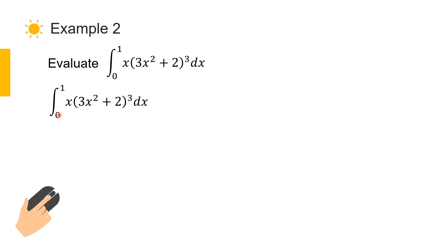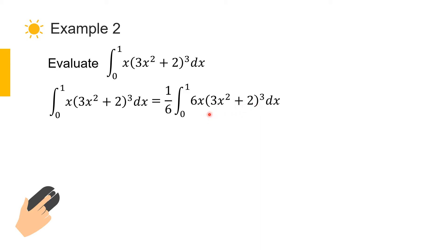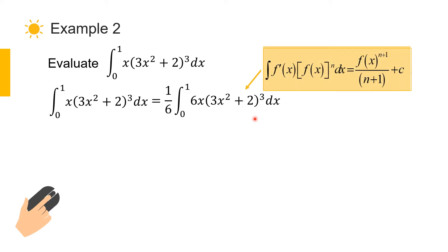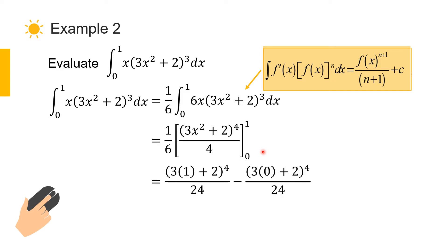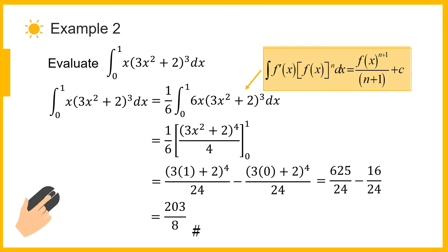Evaluating the integral of x multiplied by (3x squared plus 2) to the power of 3 from x equal 0 to x equal 1. We rewrite the function as 1 over 6 times the integral of 6x multiplied by (3x squared plus 2) to the power of 3, since 6x is the derivative of 3x squared plus 2. We apply the integration rule for f prime(x) times f(x) to the power of n. Substituting the upper and lower limits, the integral value is 203 over 8.